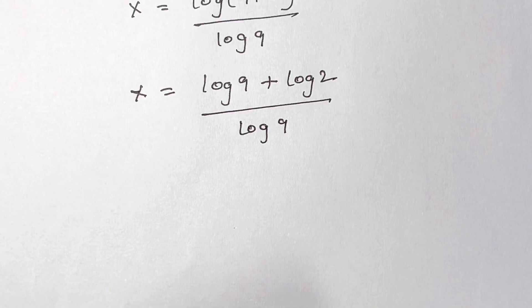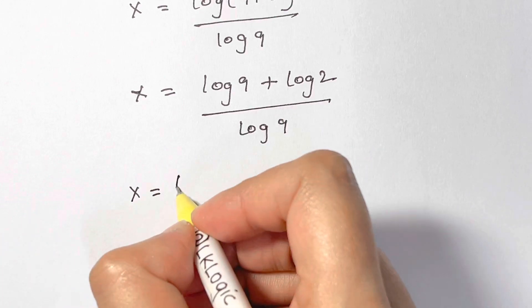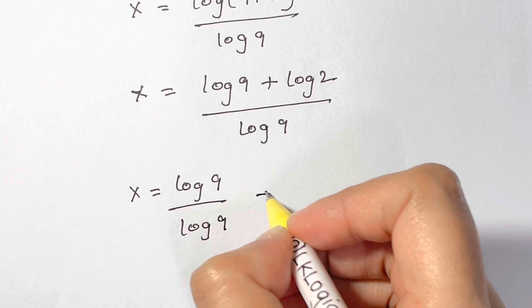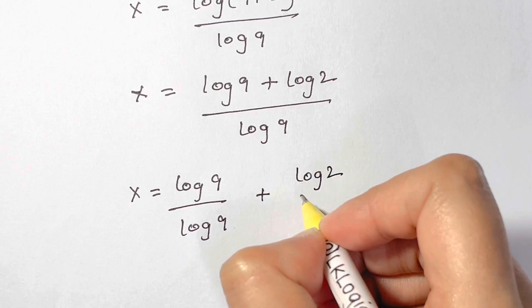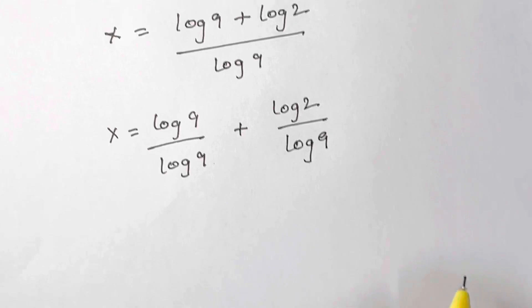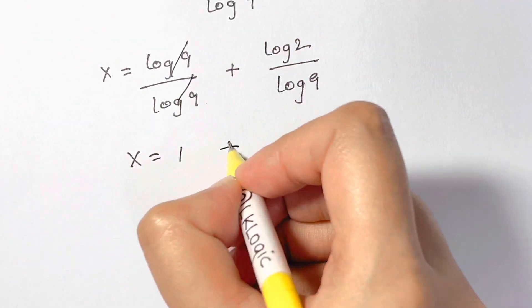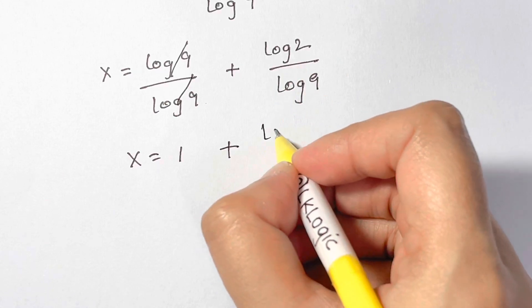Let's separate them. So we have x equals log 9 over log 9 plus log 2 over log 9. So log 9 over log 9 gets cancelled and that's equal to 1 plus log 2 over log 9.